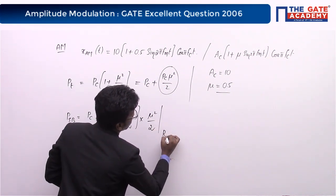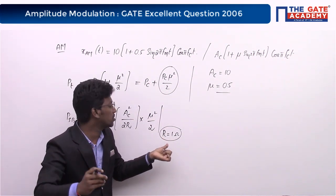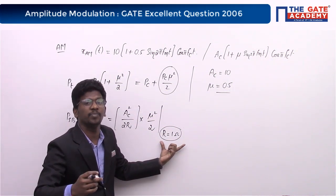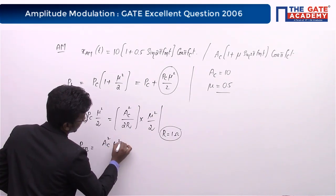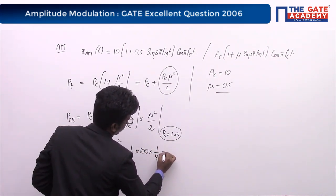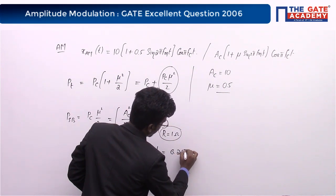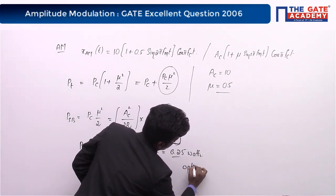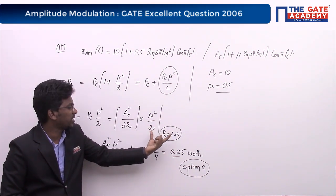Since no resistance value is given, we take the normalized power by assuming R = 1 Ω. If a resistance value were given in the question, you would use that value. So the sideband power = A_c² × μ² / 4 = (1/4) × 100 × 0.25 = 6.25 watts. This matches option C, which is the correct answer.